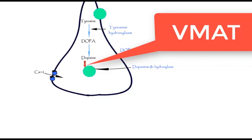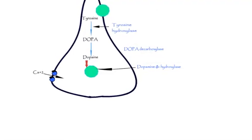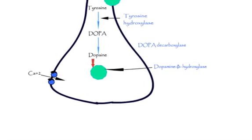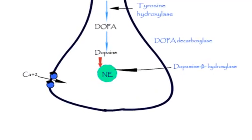The conversion of dopamine to norepinephrine takes place in the storage vesicle by enzyme dopamine beta hydroxylase.